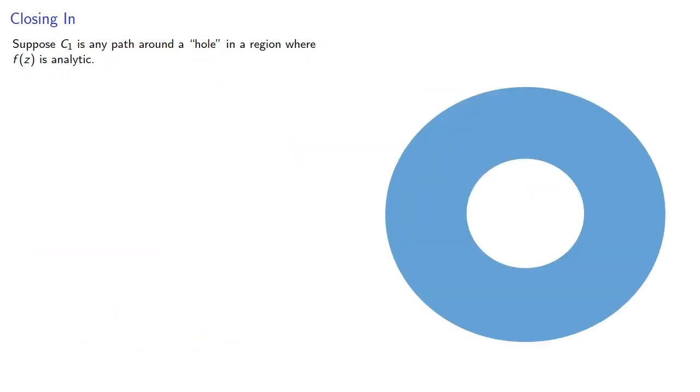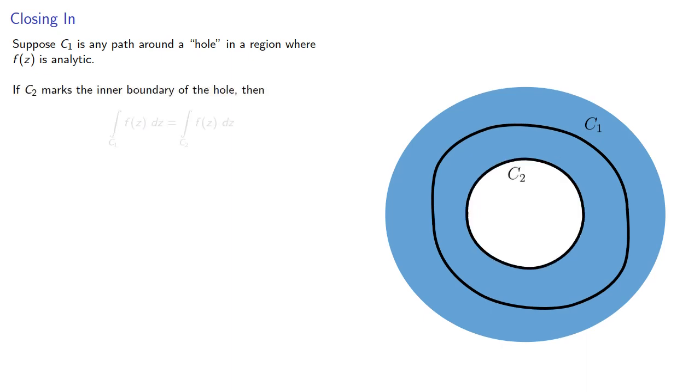This tells us the following: Suppose C₁ is any path around a hole in a region where f(z) is analytic. If C₂ marks the inner boundary of the hole, then the integral over C₁ equals the integral over C₂.